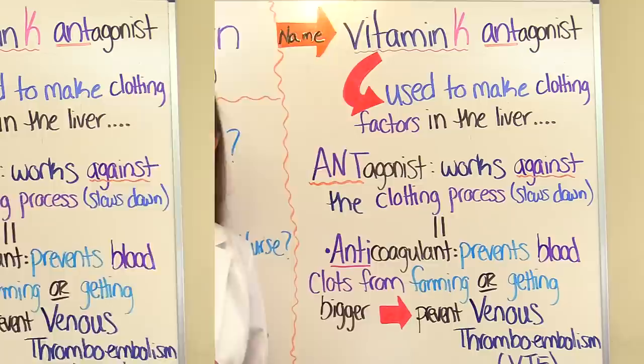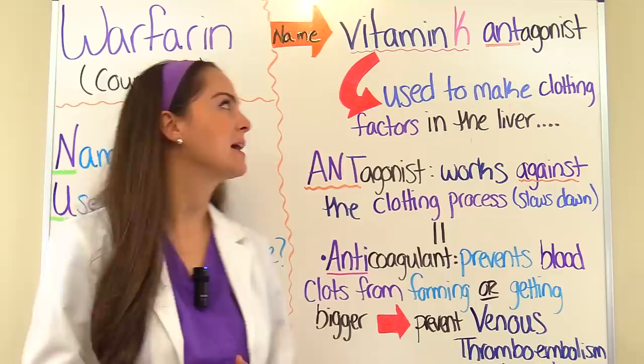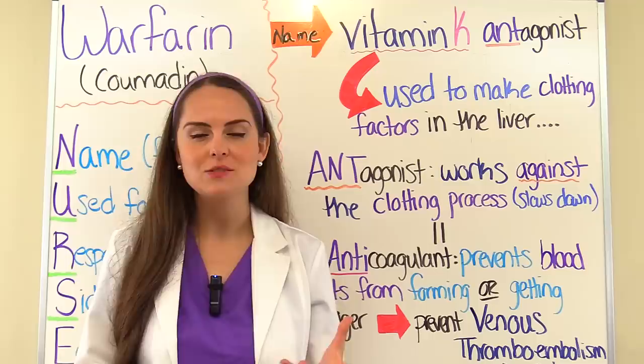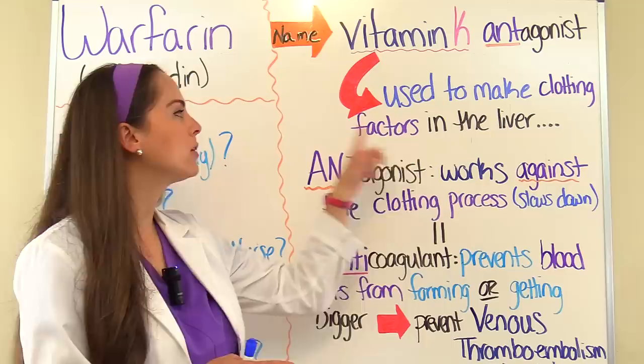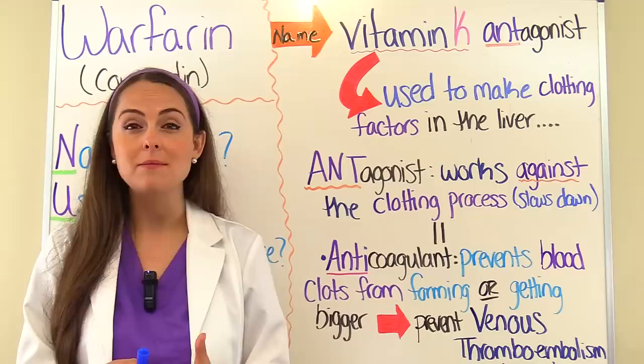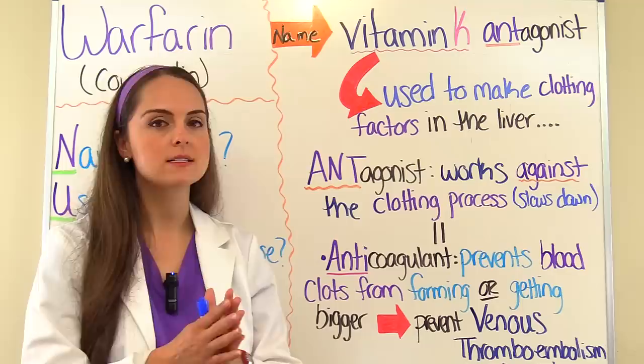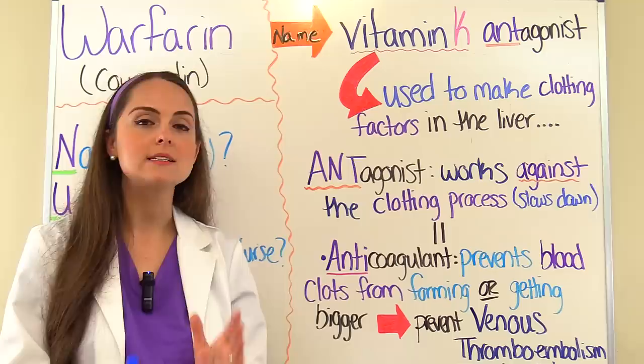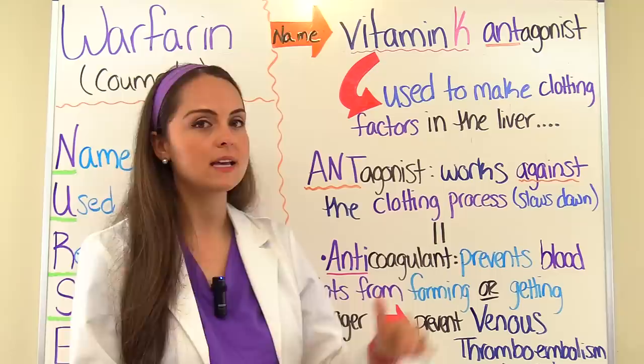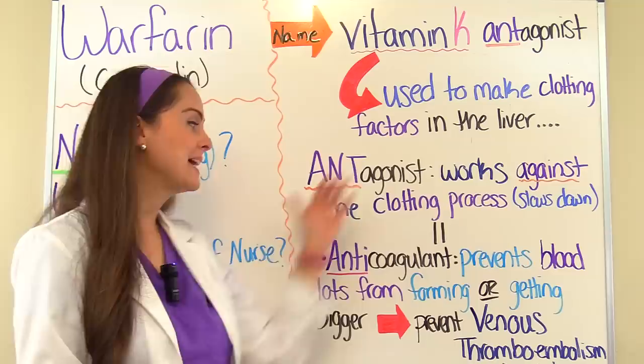We're dealing with the drug warfarin, also called Coumadin. This drug is part of the family of the vitamin K antagonists. To understand how this drug works, we need to understand the role of vitamin K in our body. Vitamin K is used to make clotting factors in the liver, and there are specific clotting factors that depend on vitamin K to work properly. A vitamin K antagonist — the prefix ANT means it works against — so it works against what vitamin K normally does, slowing down the patient's ability to form a clot, making it an anticoagulant.